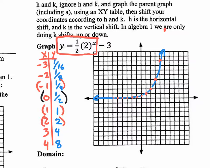That is what we call the parent graph — it is not the final graph. The final graph has to take into consideration this k value of negative 3. If it said positive 3, I would take this blue graph and move it up 3 units, but it's negative 3, so I need to move it down 3 units.